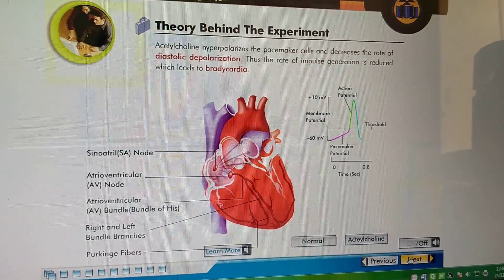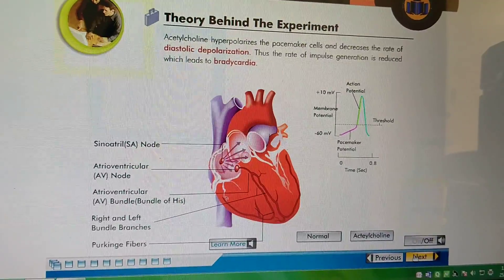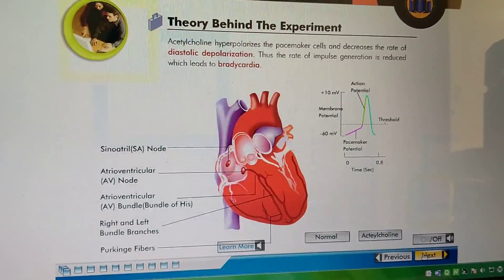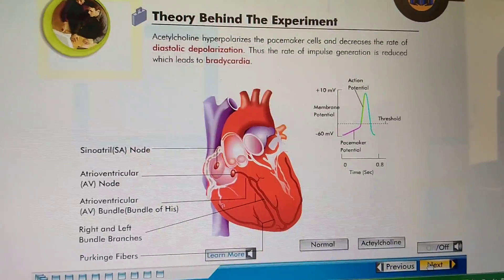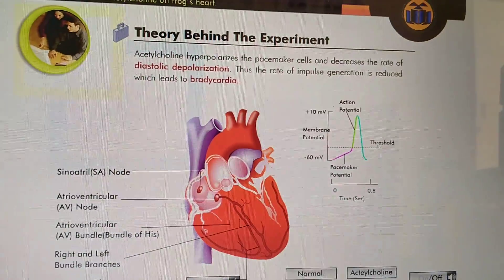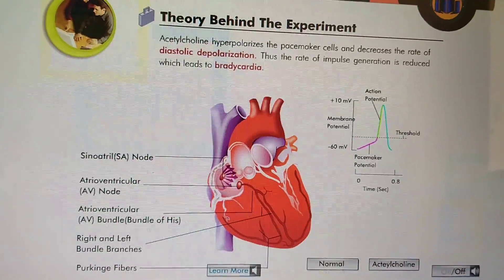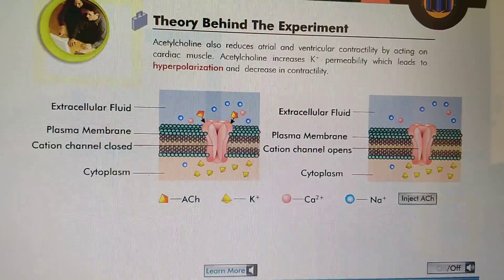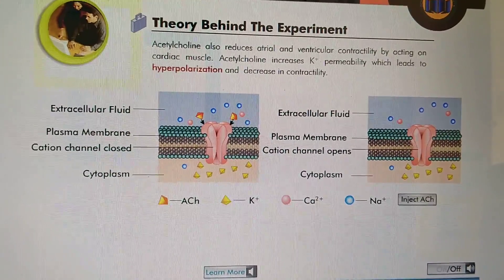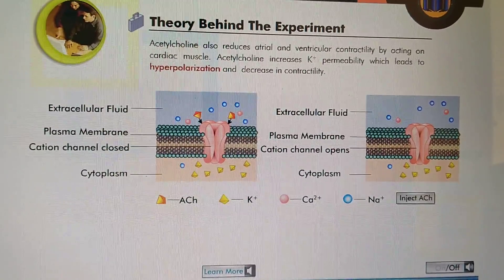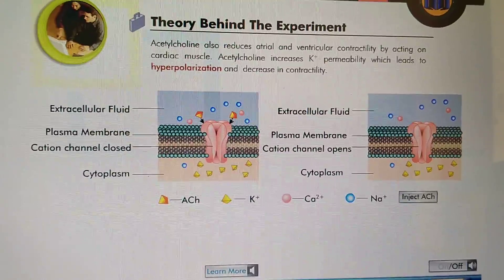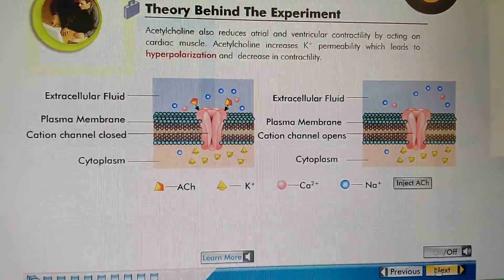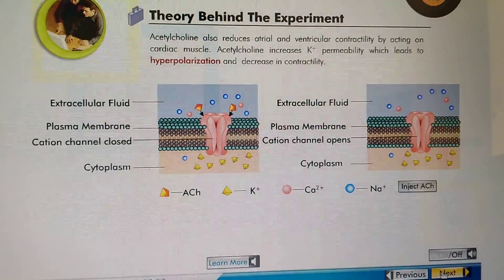Acetylcholine hyperpolarizes the pacemaker cells and increases the rate of diastolic depolarization. Because of this, the rate of impulse generation is reduced, which leads to bradycardia. Acetylcholine also reduces atrial and ventricular contractility by acting on cardiac muscle. Acetylcholine increases potassium permeability, which leads to hyperpolarization and decrease in contractility.